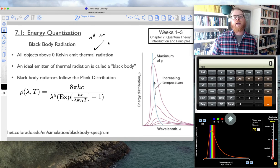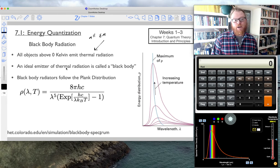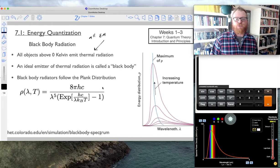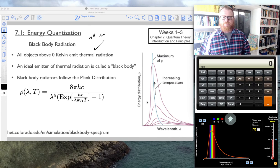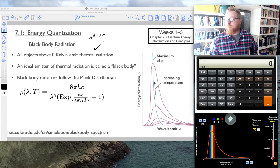All electromagnetic radiation can be classified as thermal radiation. An ideal emitter of this thermal radiation is called a blackbody, and blackbody radiators follow the Planck distribution, or known as Planck's law.